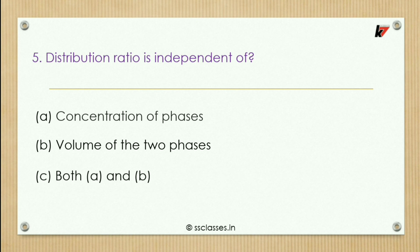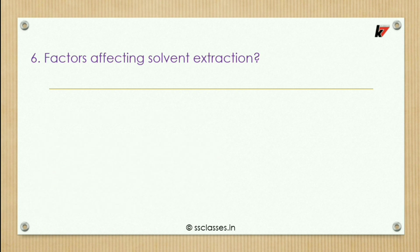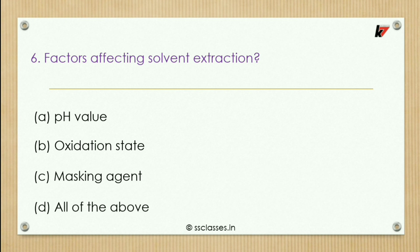Fifth question: distribution ratio is independent of — options: concentration of phases, volume of two phases, both A and B, or none of these. The correct option is only volume of two phases. Sixth question: factors affecting solvent extraction — options: pH value, oxidation state, masking agent, or all of the above.